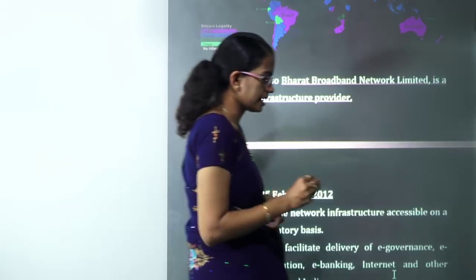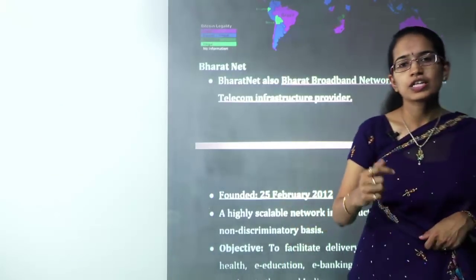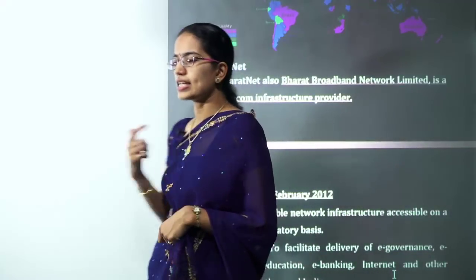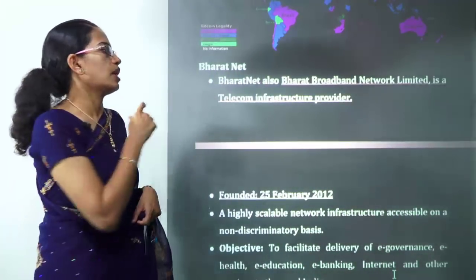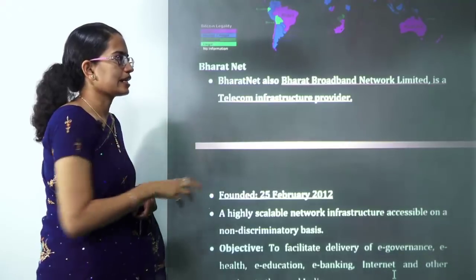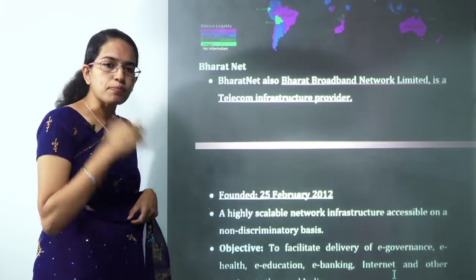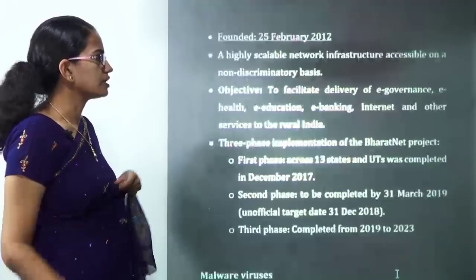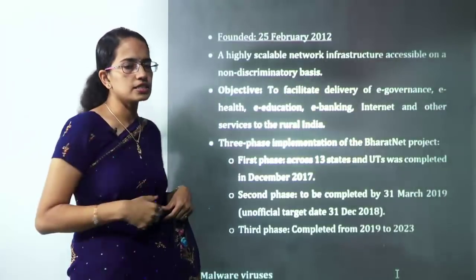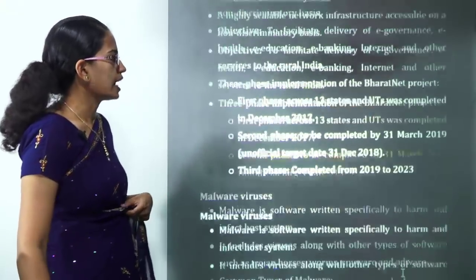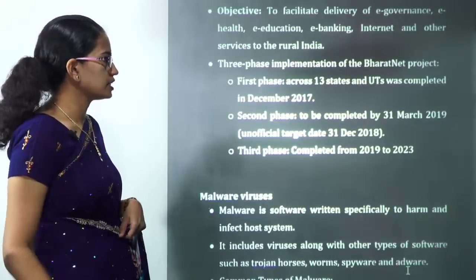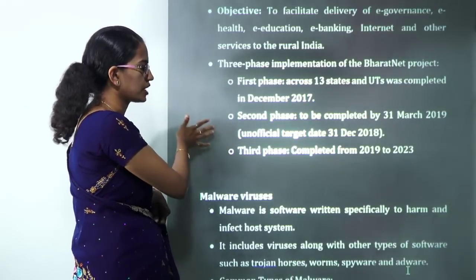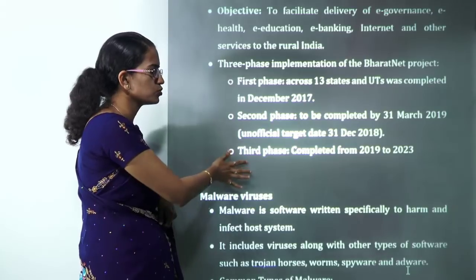Bharat Net aims to provide internet connectivity to rural areas by 2022. It involves providing optical fiber connectivity to rural infrastructure. The project initially started in 2012, has gone through various phases, is currently in the second phase, and aims to move to the third phase next year.